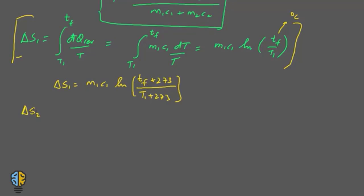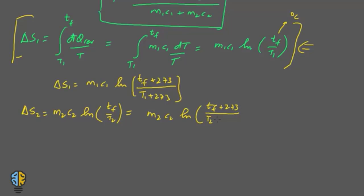Similarly, the entropy change for subsystem two is ΔS2 = m2·c2·ln(Tf / t2), since temperature changes from t2 to Tf. Converting to Kelvin: ΔS2 = m2·c2·ln((Tf + 273) / (t2 + 273)).